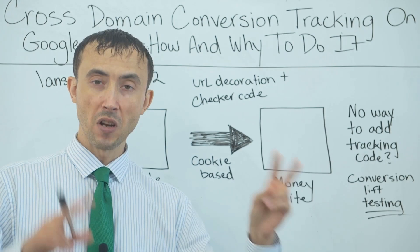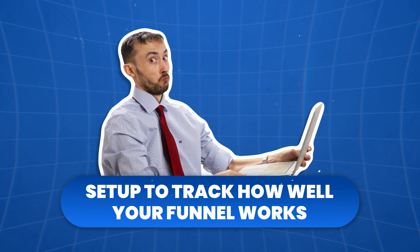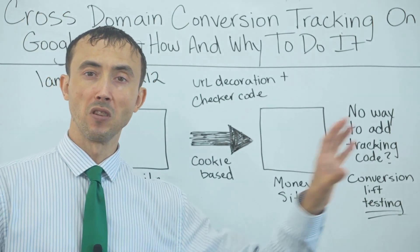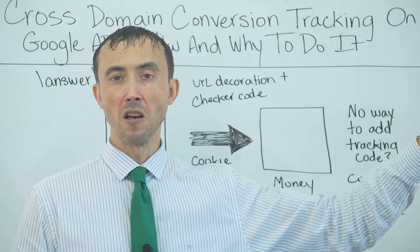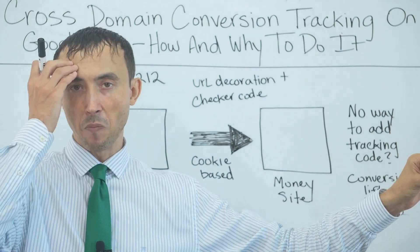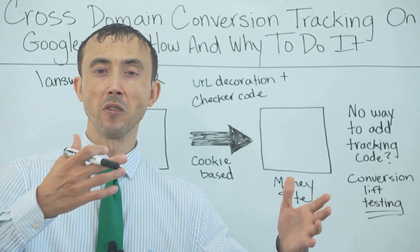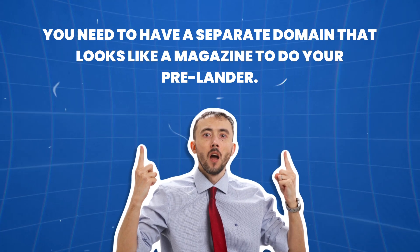When sending people to that prelander website, you're going to have to have cross-domain conversion tracking set up to track how well your funnel works, given it's on two separate domains. You could save time by putting the article on the same domain, but the drawback is some people will notice the URL and realize that the magazine article is on the same website as the product being pitched. A lot of people won't notice it, but if you want the full conversion potential, you want a separate domain that just looks like a magazine.